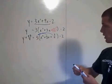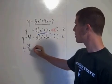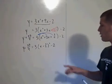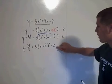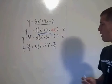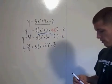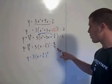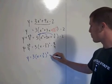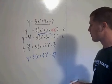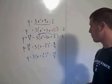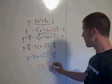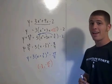Subtract 27 fourths from both sides. Writing 2 as 8 fourths, you get y equals 3 times x plus 3 halves squared, and negative 8 fourths minus 27 fourths is negative 35 fourths. So y equals 3 times x plus 3 halves squared minus 35 fourths, and the vertex is the point negative 3 halves, negative 35 fourths. And that's math-tastic.